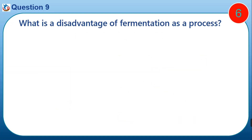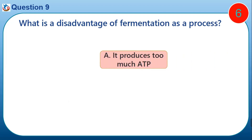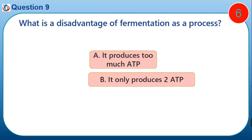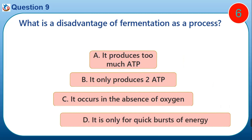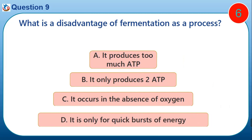Question nine: what is the disadvantage of fermentation as a process? A) It produces too much ATP. B) It only produces two ATP. C) It occurs in the absence of oxygen. D) It is only for quick bursts of energy.